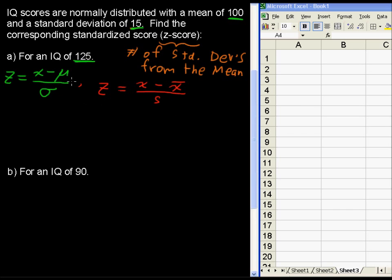So we can just plug these numbers in exactly, where 125 is our x value, 100 is our mu, our mean, 15 is our sigma. So I'll just plug that right in and I get z equals 125 minus 100 all over 15.